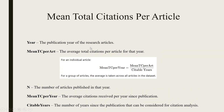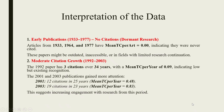The year is the publication year of the research articles. Mean TC per article is the average total citations per article for that year. Mean TC per year equals mean TC per article divided by citable years — the average is taken across all articles in the dataset published in that year. Citable years is the number of years since a publication that can be considered for citation analysis.